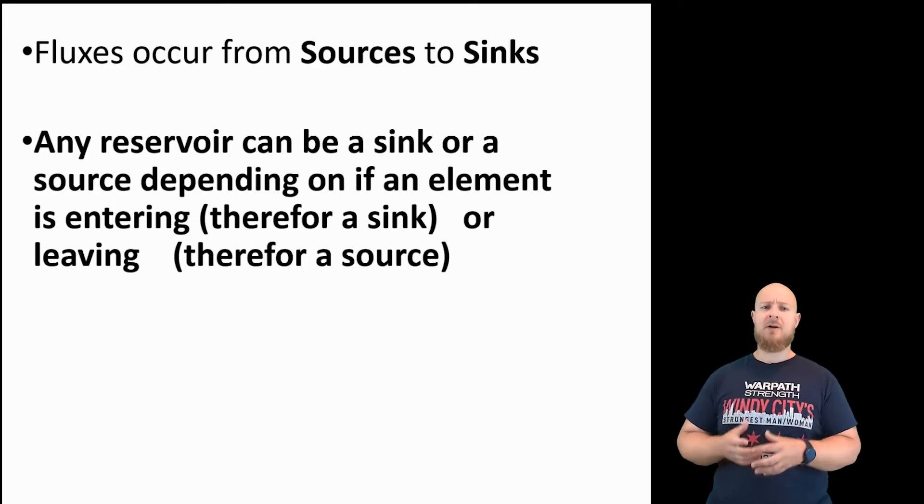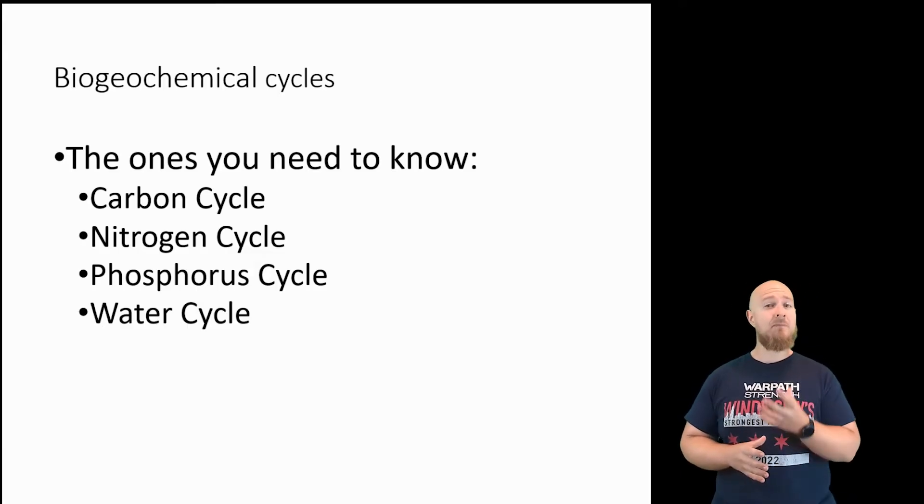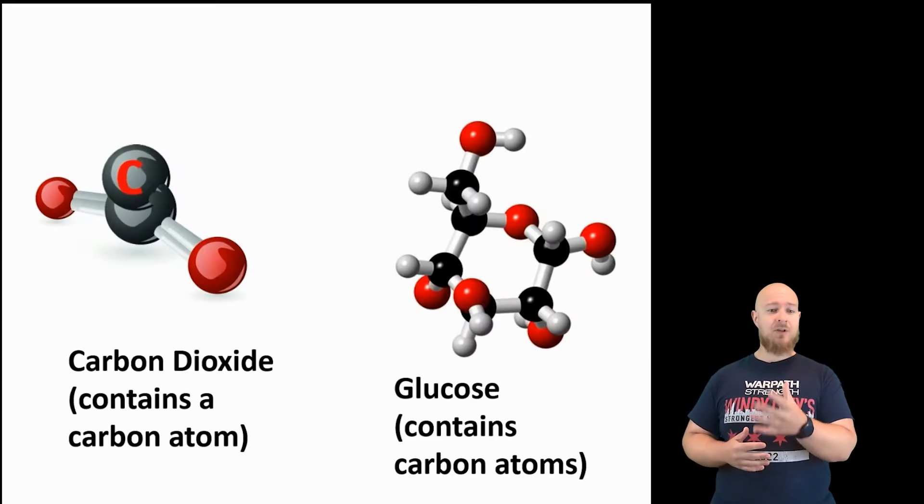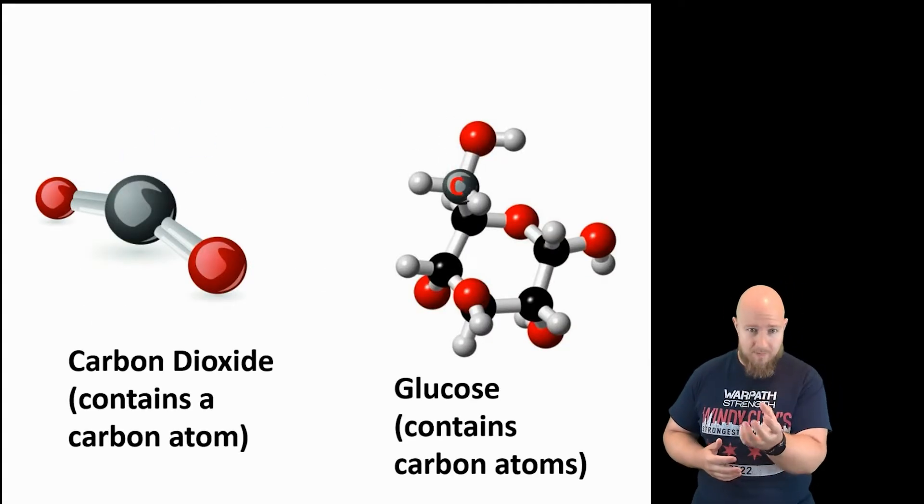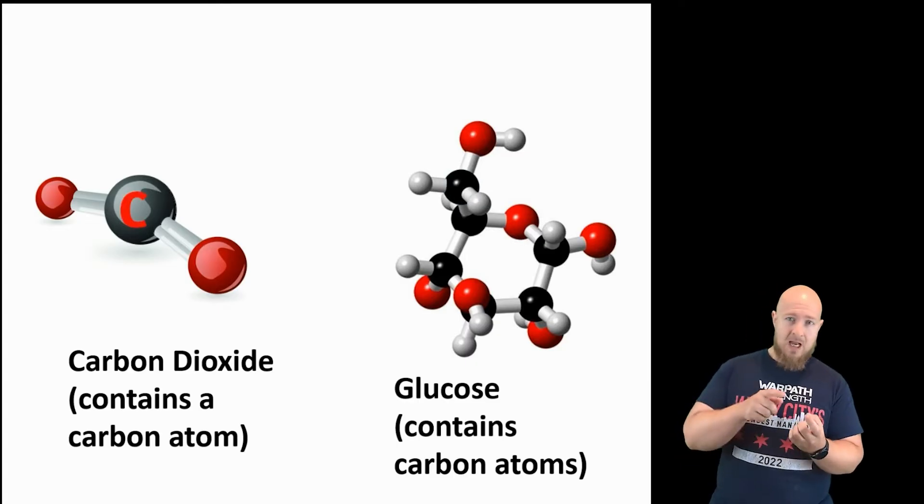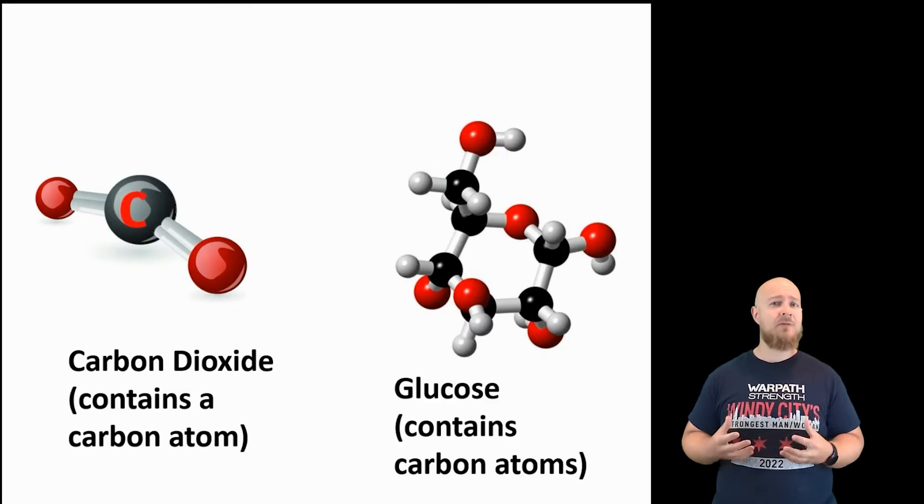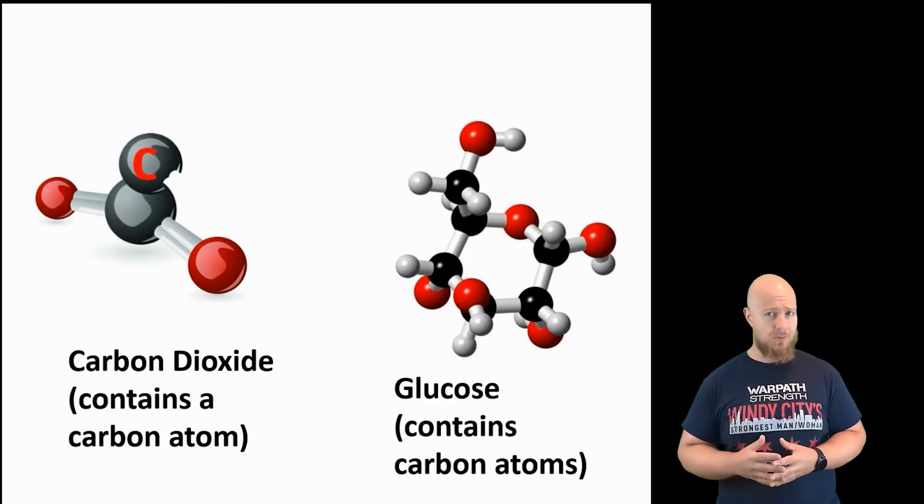When we're talking about the carbon, nitrogen, and phosphorus cycles, it's important to remember that each element can be part of a different molecule during each step. For example, during the carbon cycle, the carbon that is found inside the molecule carbon dioxide in the atmosphere, after photosynthesis, the carbon from CO2 is now one of the carbon atoms found inside the glucose that was produced.